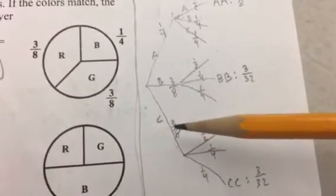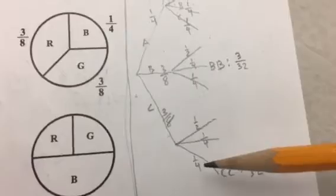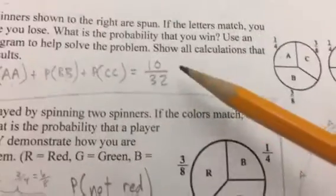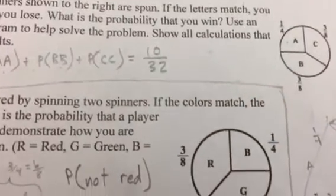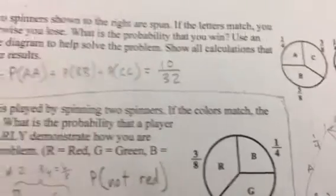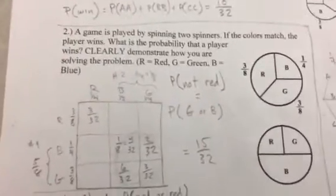Three-eighths times one-fourth is three thirty-seconds. Then C is three-eighths times C on the other one is one-fourth, so three-eighths times one-fourth again, three thirty-seconds. You add these three numbers together and that gives you 10 over 32, ten thirty-seconds, or five-sixteenths.